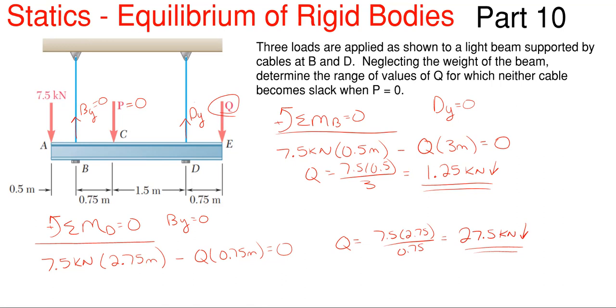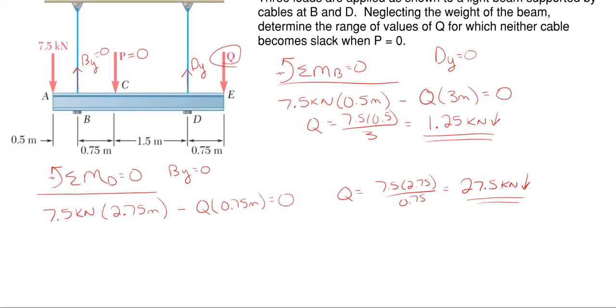So my range for my Q would be 1.25 kilonewtons. And that would be my bottom part of my range. And then my upper range would be 27.5 kilonewtons. So as long as Q is between those values, my reactionary tension or my reactionary cable forces will be in tension.